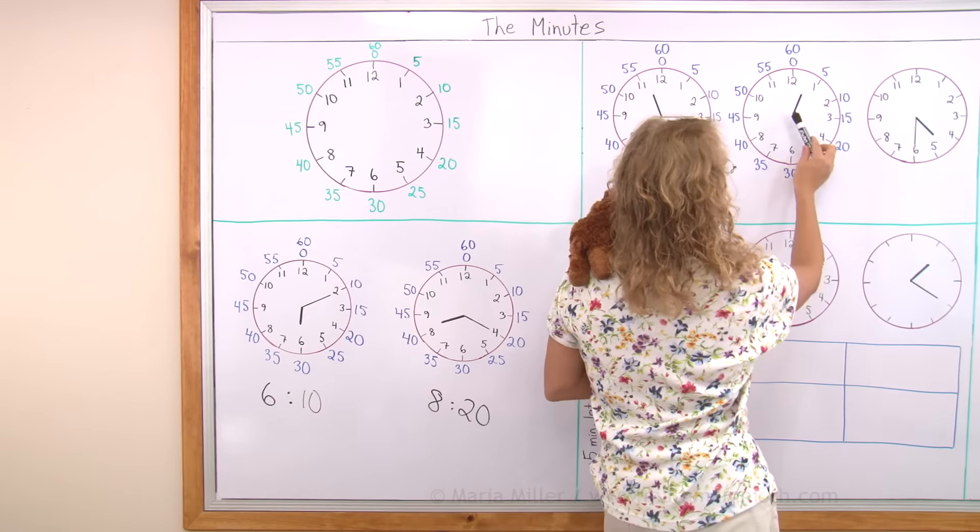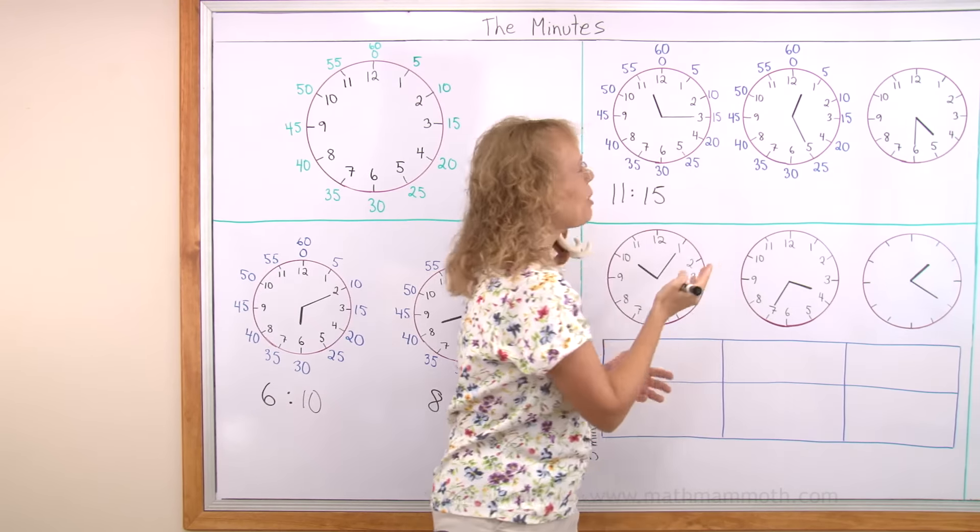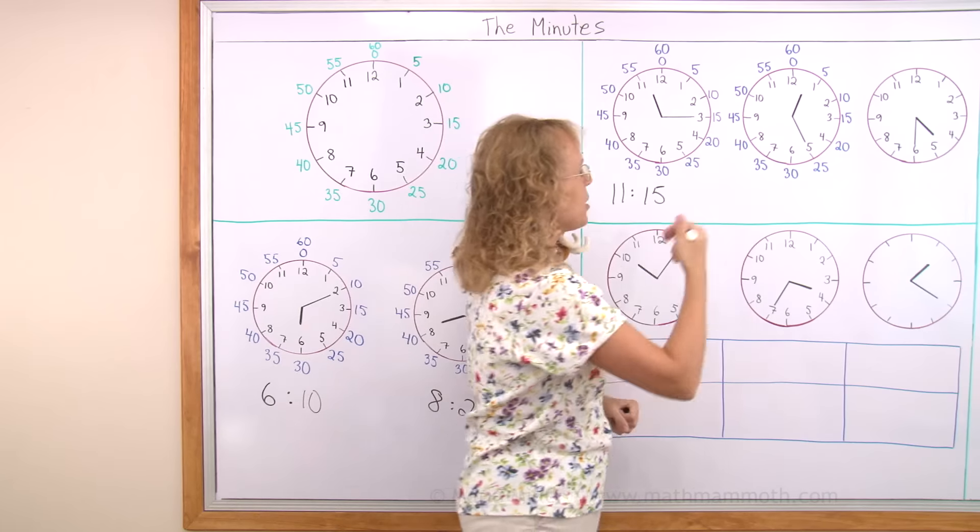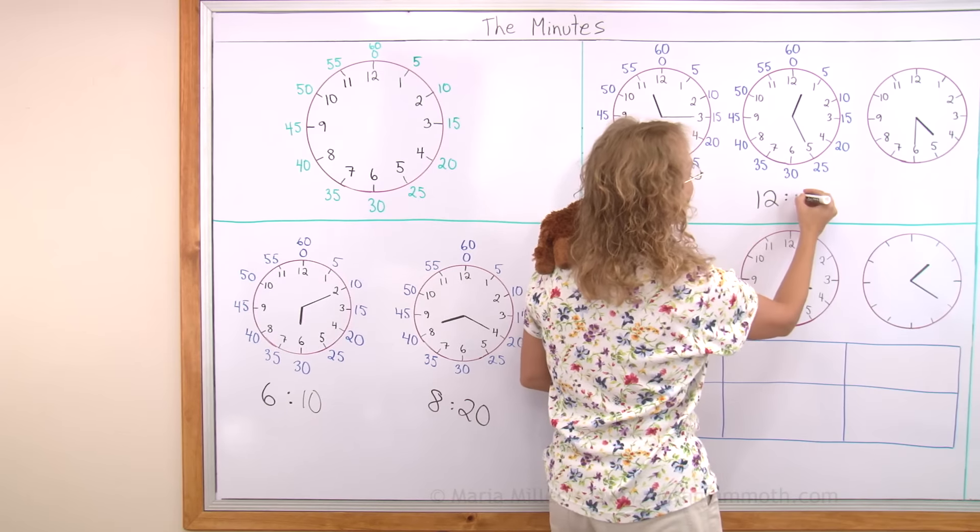Over here. Hour hand. Points over there. Between 12 and 1. But you still need to write it as 12 hours. And minute hand. Over here. 25.